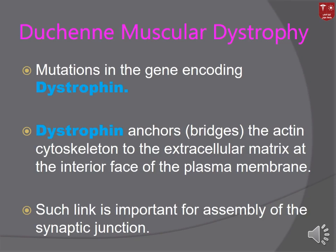What is dystrophin? This is a muscle protein that anchors or bridges the actin cytoskeleton to the extracellular matrix and the interior face of the plasma membrane. Dystrophin is a muscle protein existing inside the muscle cell, and it forms a bridge that links the intracellular cytoskeleton or the actin filaments with the extracellular matrix, thus helping to perform proper muscle contraction.